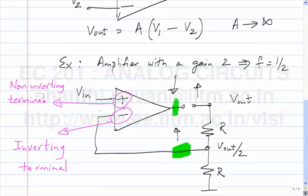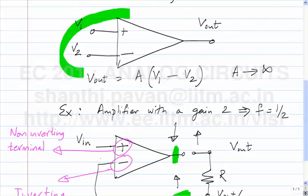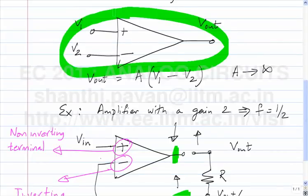In your earlier classes, when you see an op-amp in a network you blindly put V1 = V2. Now you know why that makes sense and when it makes sense: only when the op-amp gain is infinity AND the op-amp is in a negative feedback loop. The op-amp is an ideal voltage controlled voltage source with very large gain. What are the attributes of a voltage controlled voltage source? The input impedance of an ideal VCVS must be infinite, and the output impedance must be zero.